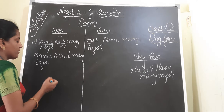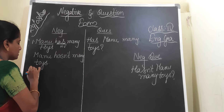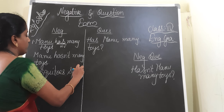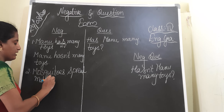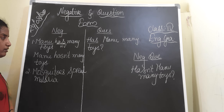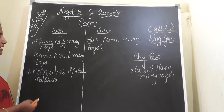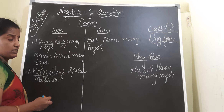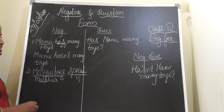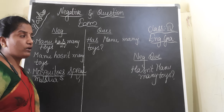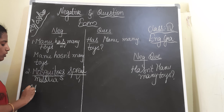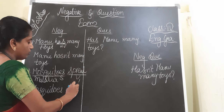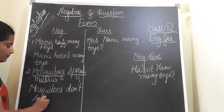Coming to the next statement: Mosquitoes spread malaria. What is the subject? About what are we talking? About the mosquitoes — so mosquitoes are the subject. 'Spread' is the verb — a main verb (V1). Whenever there is a main verb in a sentence, to write the negative form we add 'do not.' So: Mosquitoes don't spread malaria.